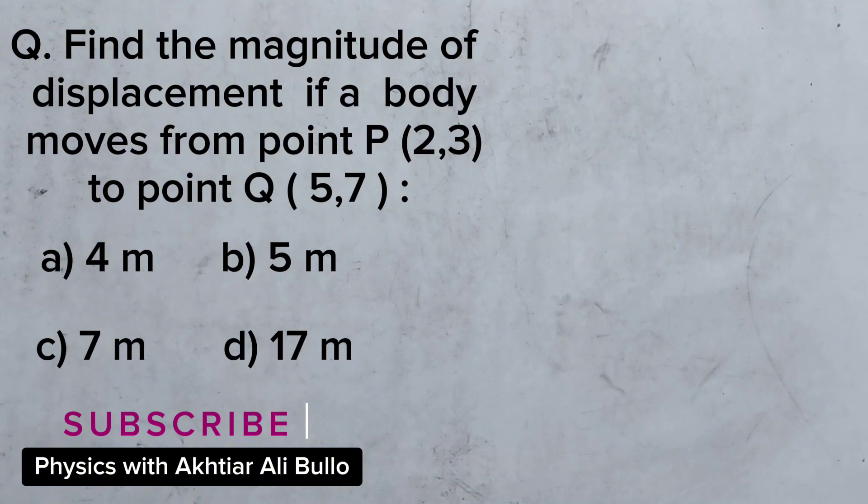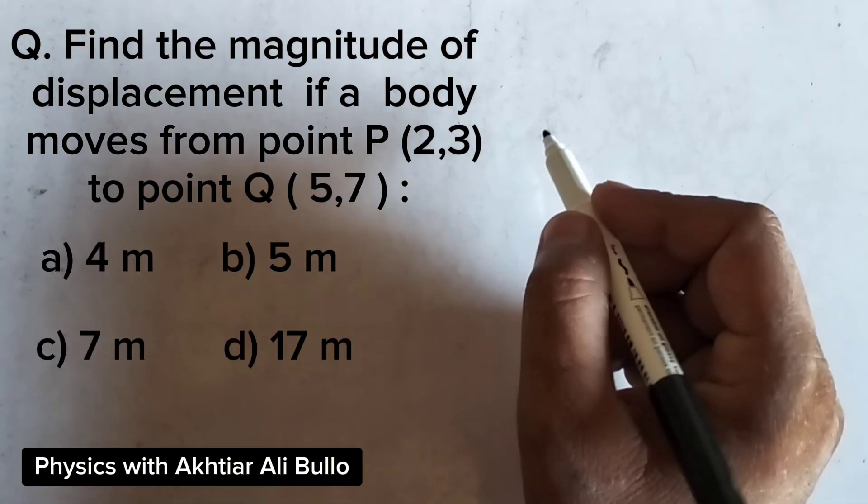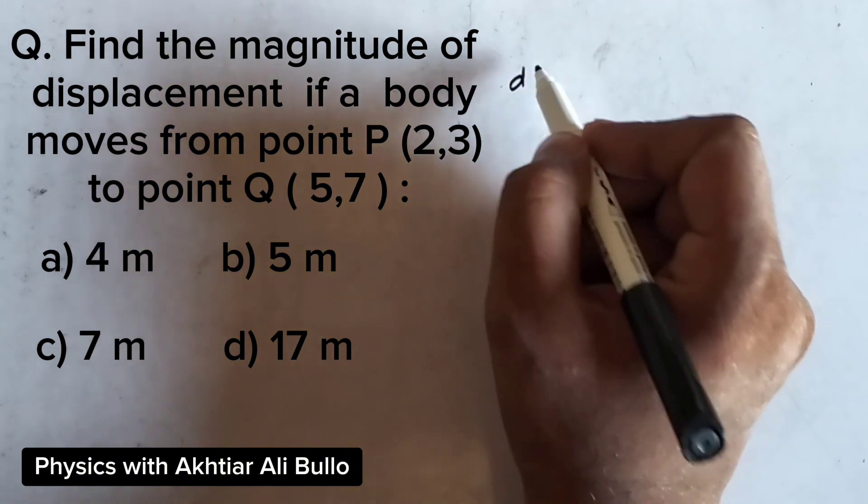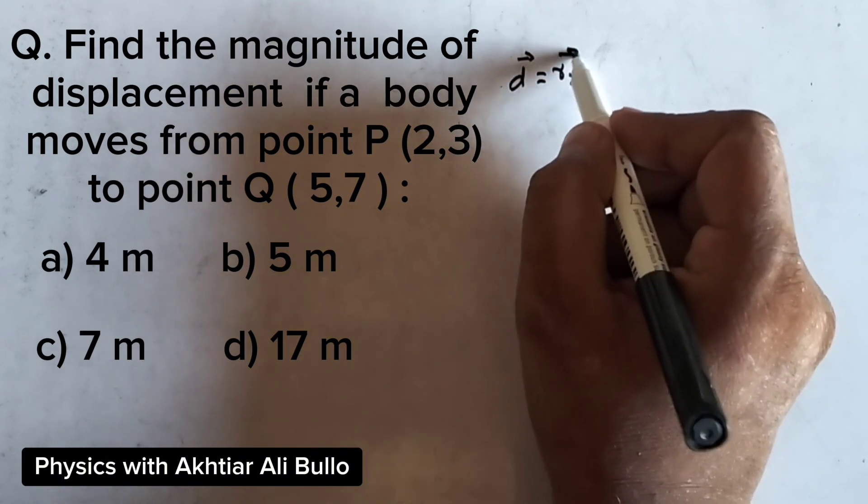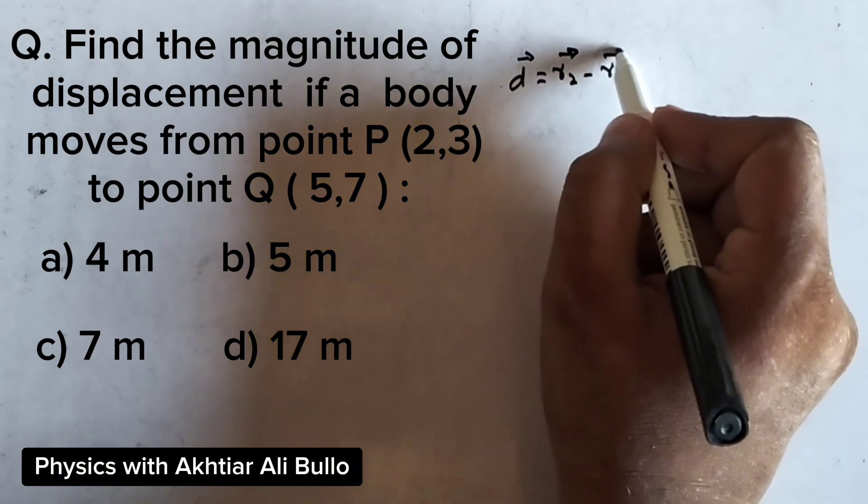Question says, find the magnitude of displacement if a body moves from point P(2,3) to point Q(5,7). Options: A) 4 meters, B) 5 meters, C) 7 meters, D) 17 meters. The displacement D is equal to R2 minus R1.